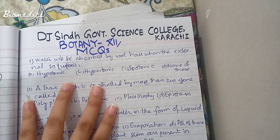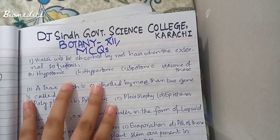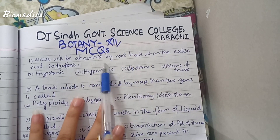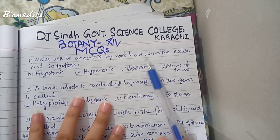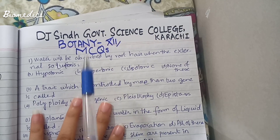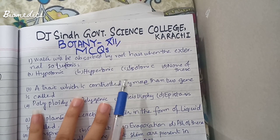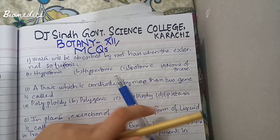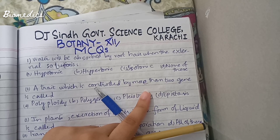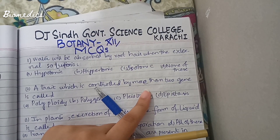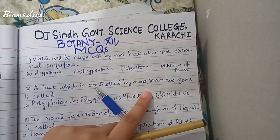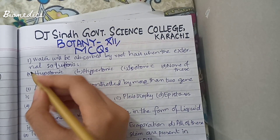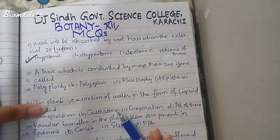Assalamualaikum students. We will do DJ Science College Secondary Botany Section A MCQs. The first question was: water will be absorbed by root hair when the external solution is — what? Water enters the cell through endosmosis when the external solution has more water and less salt, making it hypotonic. Water passively moves from higher to lower concentration. So when the external solution is hypotonic, endosmosis occurs. The answer is hypotonic.